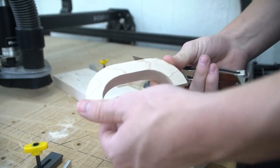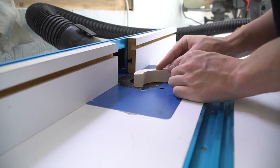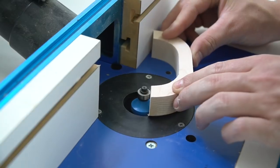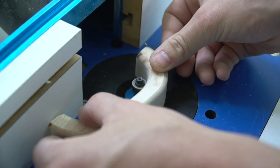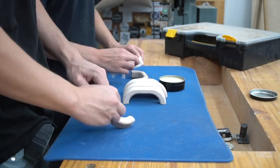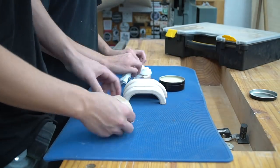After they came off the machine, we decided to round over the edges using the router table. After a bit of hand sanding, we applied a wax finish to the handles.